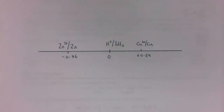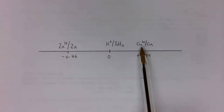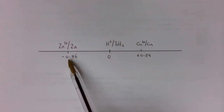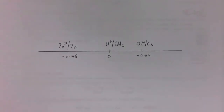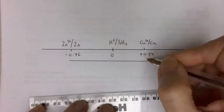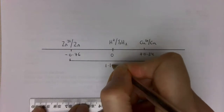You might recognise this as the number line we used after our first experiment. We can use the number line to work out the potential difference between two half cells. The half cells I'm going to look at are the zinc half cell and the copper half cell. We want to work out what voltage they have when connected. Remember, you can't measure a potential on its own — you can only measure a potential difference, because you need both a source and a sink of electrons. So all I'm working out is the difference between the two values: between minus 0.761 and plus 0.34, which works out as 1.1 volts.